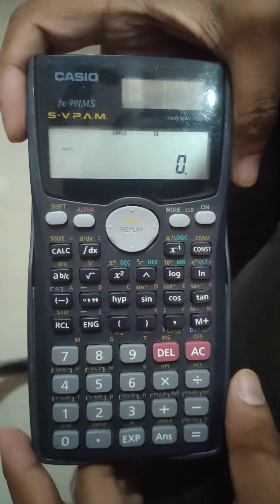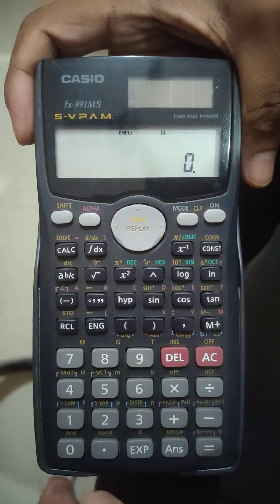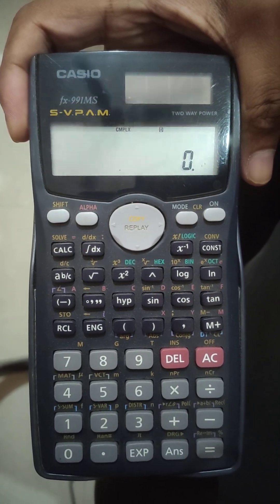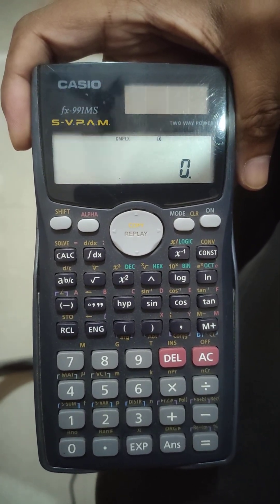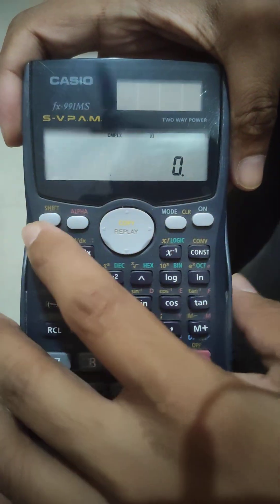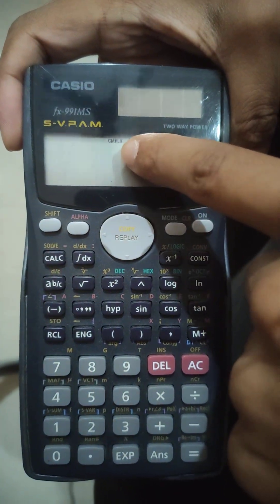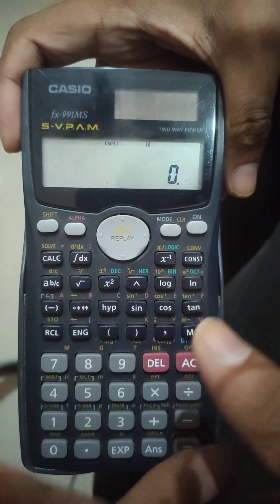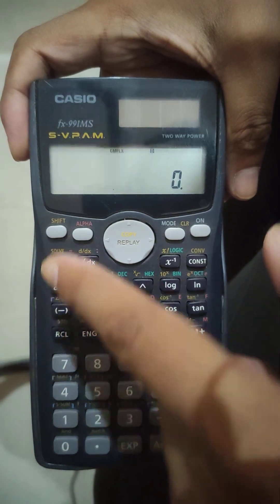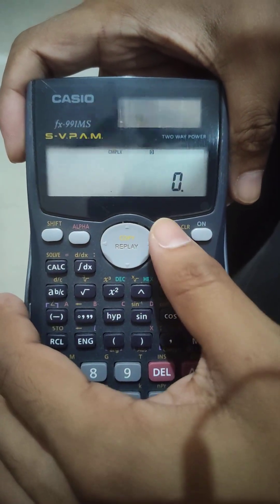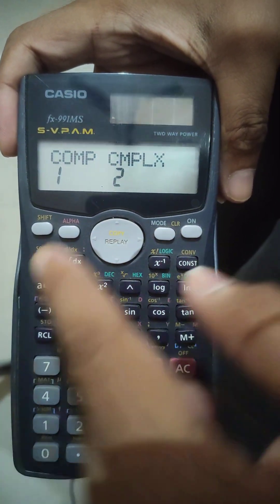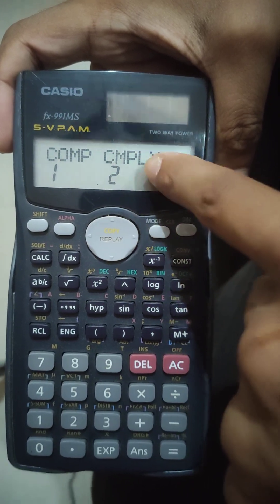For doing any type of operations that involves other types of numbers such as vectors or complex, you will have to change the mode. Since it is already in complex, I wanted to show you how to do it from the scratch. We will press this mode button and then we will be using the complex.